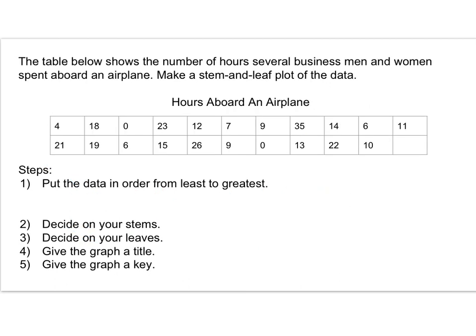Here's some different data. This table shows the number of hours several businessmen and women spent aboard an airplane. I want you to try to make your own stem-and-leaf plot. You're going to follow the same five steps: put your data in order from smallest to biggest, decide on your stems, decide on your leaves, give your graph a title and a key. When you are done, come back and check with me.